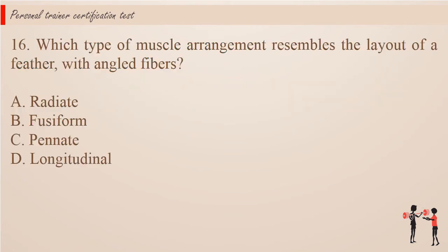Question 16. Which type of muscle arrangement resembles the layout of a feather, with angled fibers? a. Radiate. b. Fusiform. c. Pinnate. d. Longitudinal.